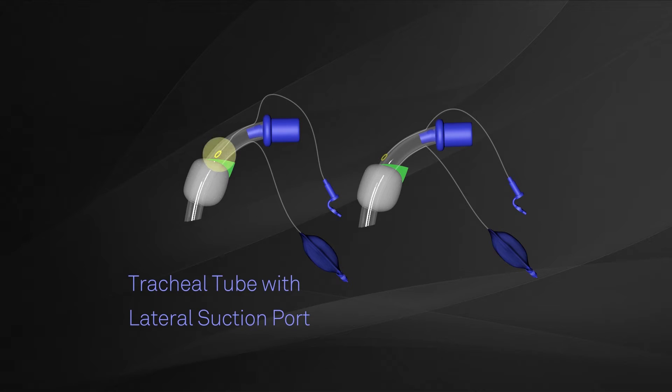The location of the suction hole in subglottic tracheostomy tubes varies, residing in lateral or dorsal positions and generally not as close to the balloon cuff as they should be for maximum secretion removal.